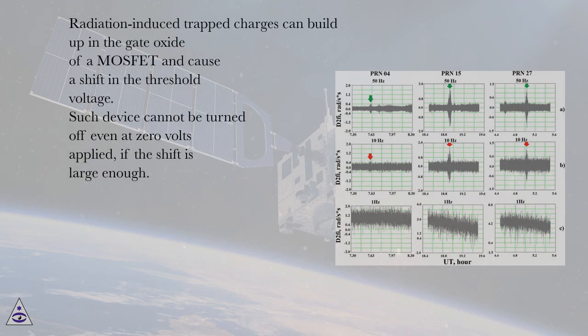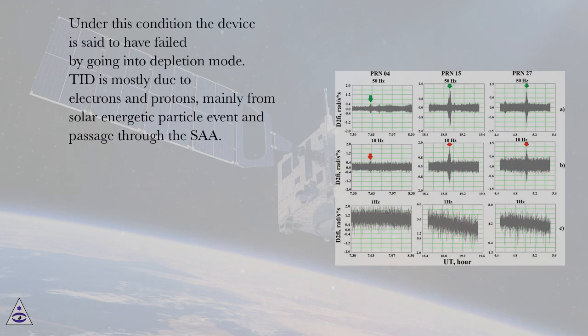Radiation-induced trapped charges can build up in the gate oxide of a MOSFET and cause a shift in the threshold voltage. Such device cannot be turned off even at zero volts applied, if the shift is large enough. Under this condition the device is said to have failed by going into depletion mode.